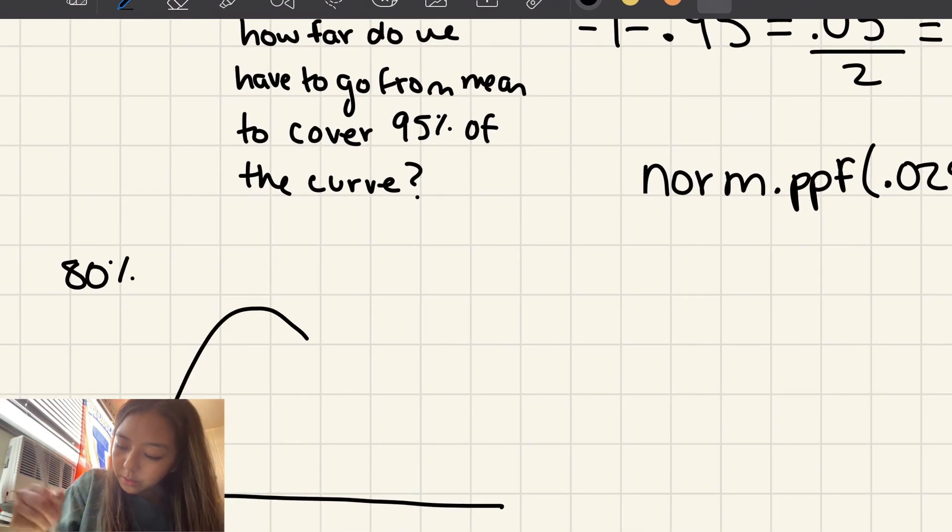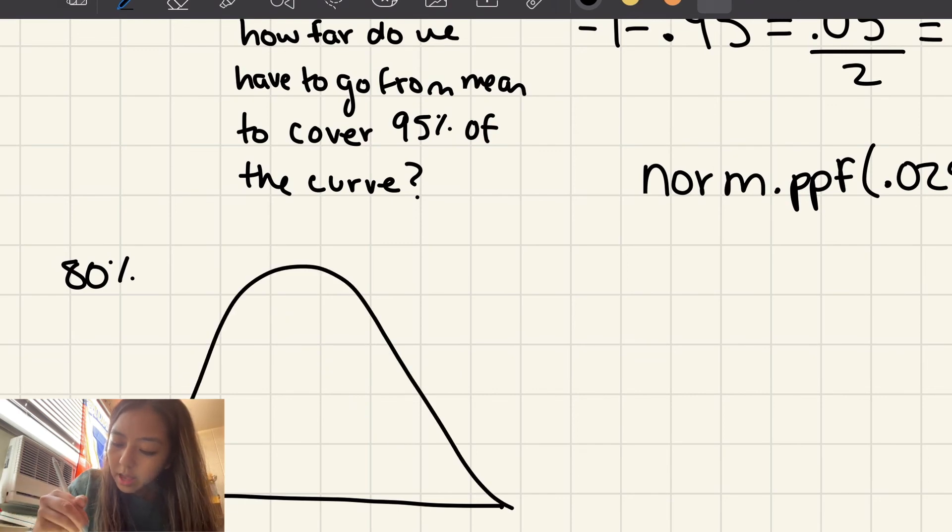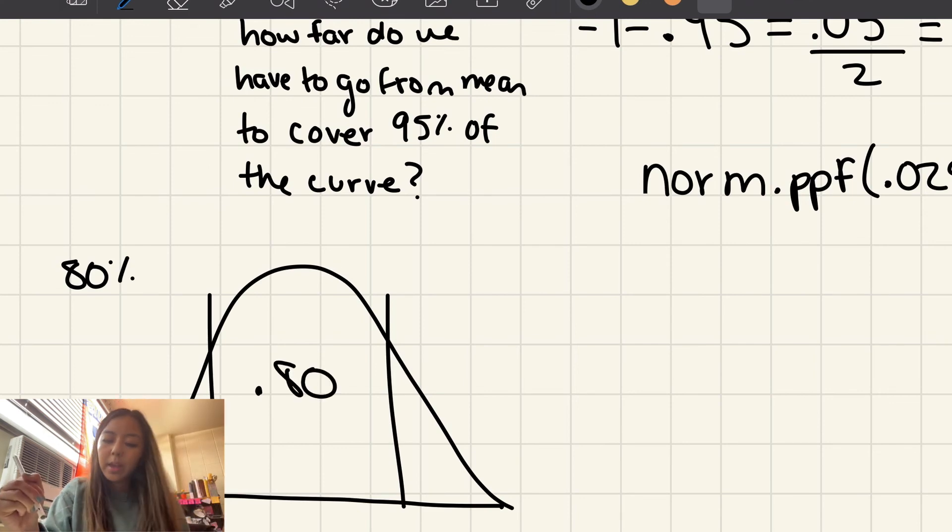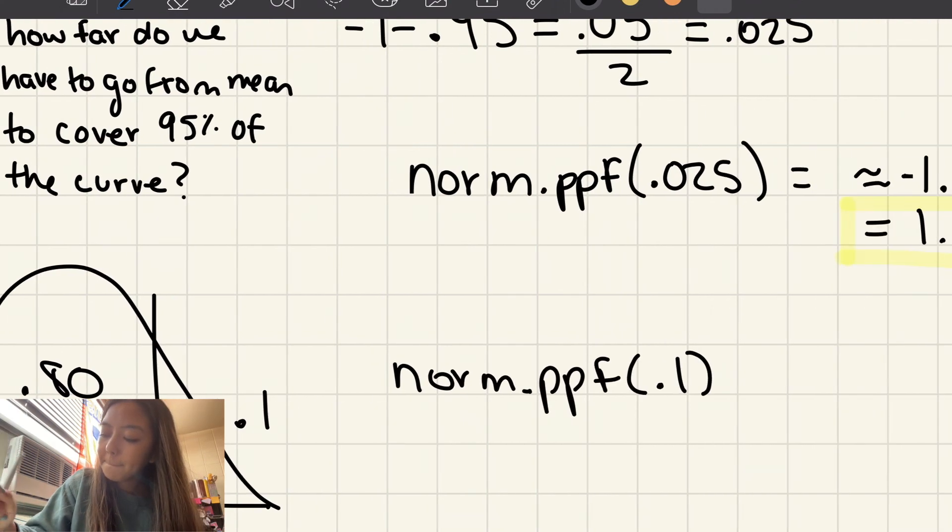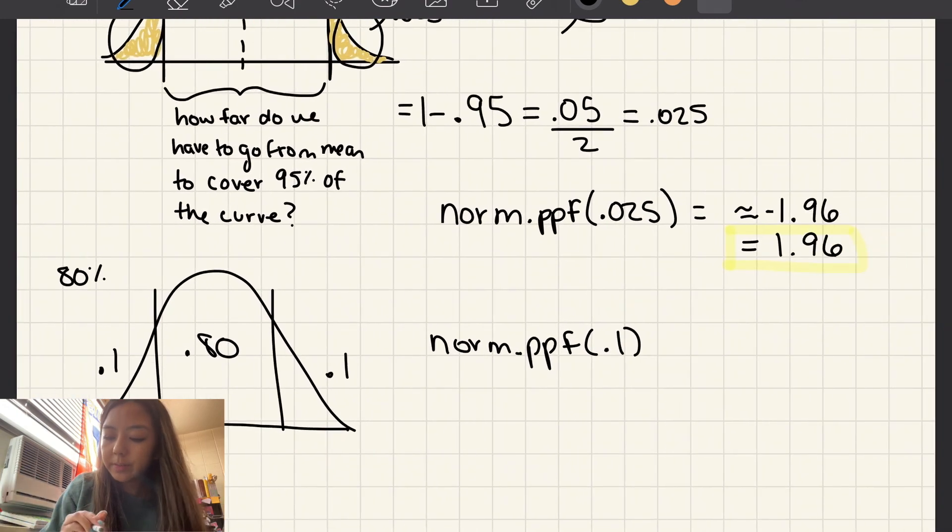But remember that, let's say we're looking at an 80% confidence level. We have our normal curve. Remember, 80% is in the middle. And to find the z-score, we're going to use the area of the tails. So 1 minus 0.8 is going to be 0.2. So the area of each tail is going to be 0.1 because you divide that by 2. So what you're plugging in to here to find the z-score is 0.1, to find your z-score for an 80% confidence level.